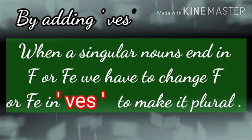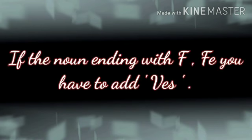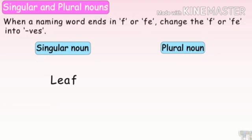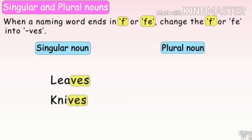Now we will learn rule number 4: VES. Rule number 4 — when a singular noun ends in F or FE, we have to change F or FE to VES to make it a plural noun. If the noun ends with F or FE, you have to add VES. Now look at the examples to understand well.